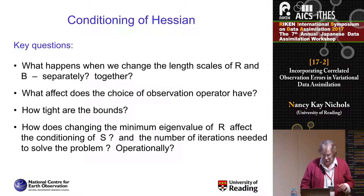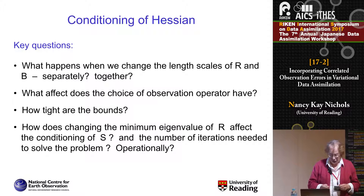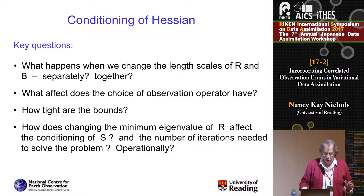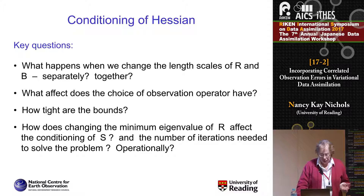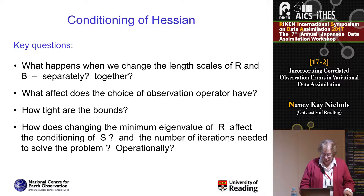Some key questions we are interested in: What happens if we change the length scales in the background and observation error correlations? How does the choice of observation operator affect things? How tight are the bounds? And how does the minimum eigenvalue affect things? Can we do something to fix these problems?